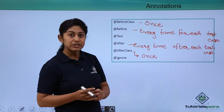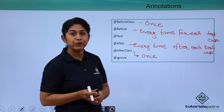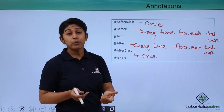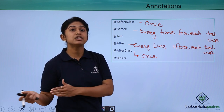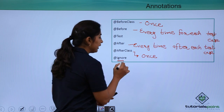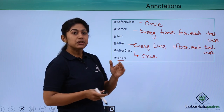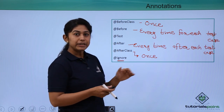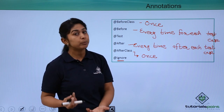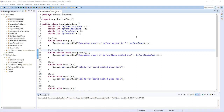The last annotation is @Ignore. Whatever test case you don't want to execute for the current test suite execution, the @Ignore annotation will be used. So these are the annotations, and now we will see it practically — how it is actually going to be executed. Let's see how different methods with different annotations are being executed in JUnit.